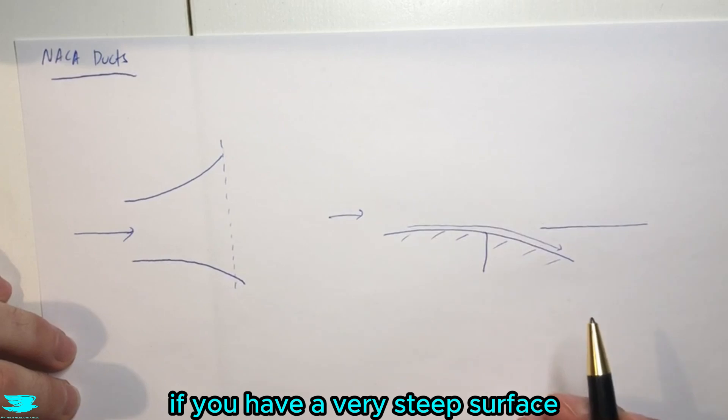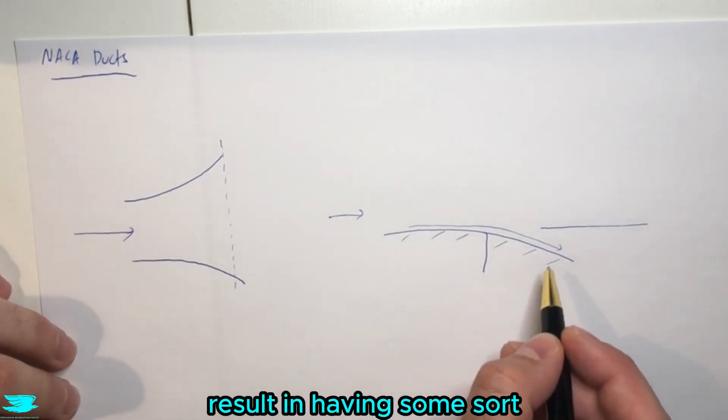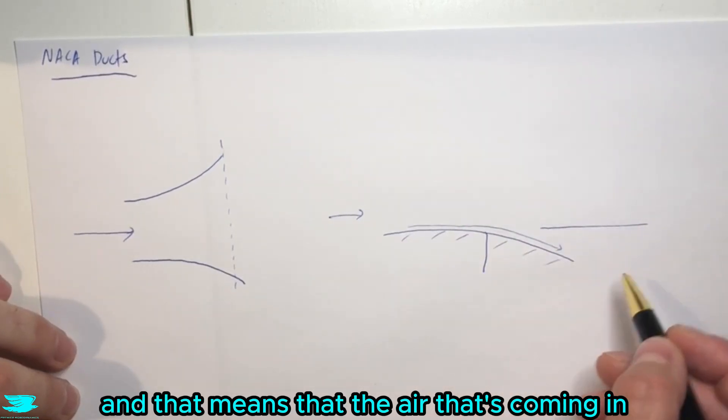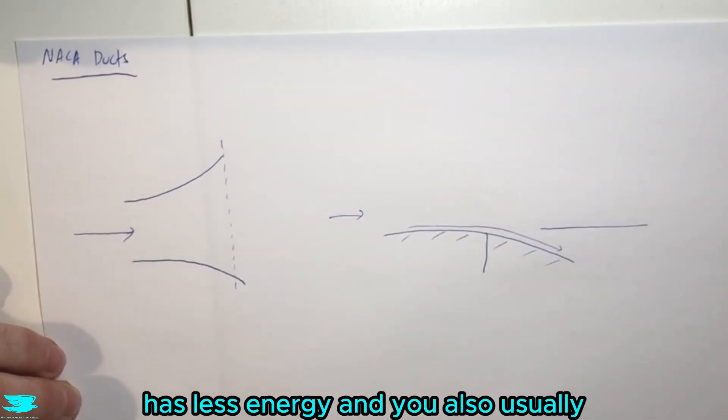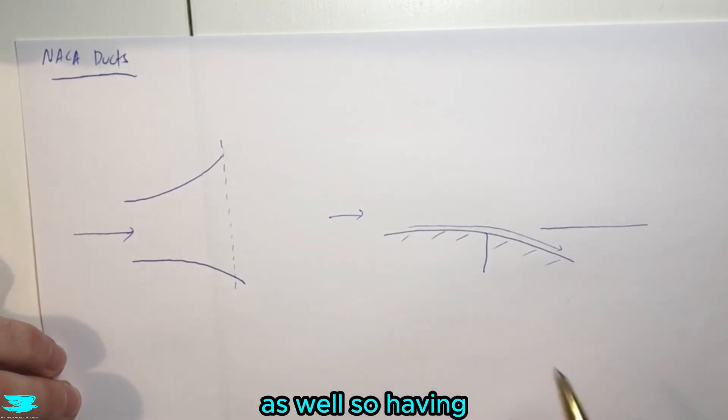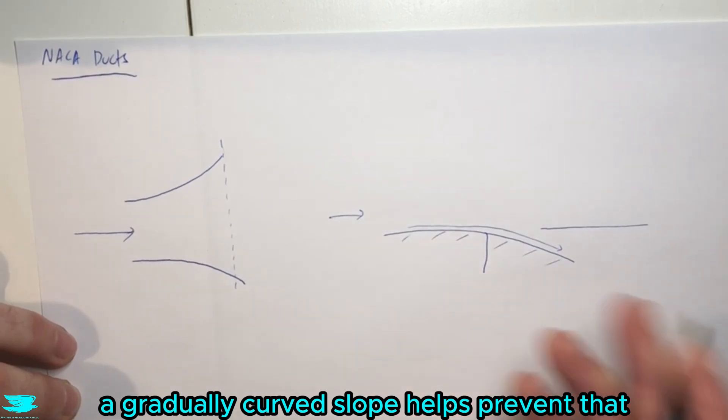If you have a very steep surface or some sort of discontinuity, you would then result in having some sort of separation occurring somewhere in this region. And that means that the air that's coming in is now a slow moving flow, has less energy. And you also usually reduce how much flow you're getting in there as well. So having a gradually curved slope helps prevent that.